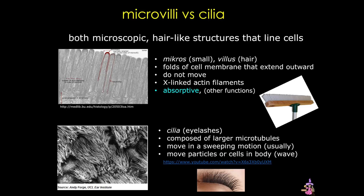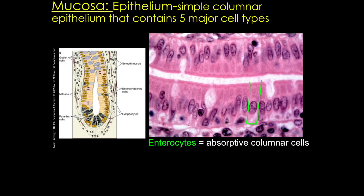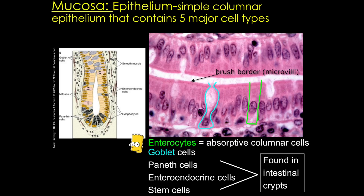Now we'll look at the intestinal mucosa and discuss the different cell types found in the epithelium, along with a quick overview of digestion. Simple columnar epithelium is found in the intestines. Here we see a cartoon showing the different cell types and their general locations. First, outlined in green, we have the enterocytes — our absorptive columnar cells that do the bulk of digestion. In blue, we see goblet cells, which we've seen before in the stomach and respiratory system. There are also paneth, enteroendocrine, and stem cells, mostly found in the intestinal crypts.